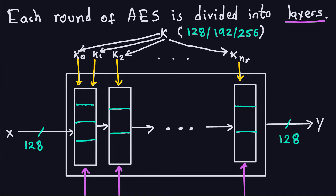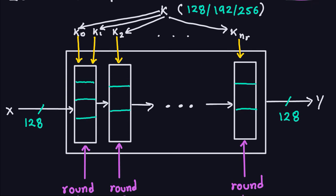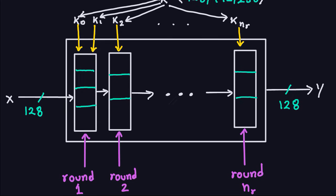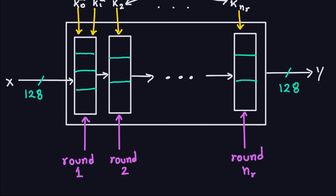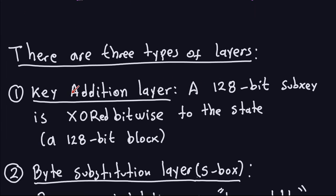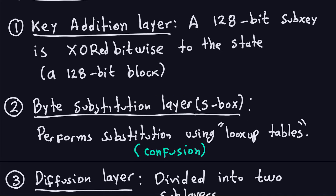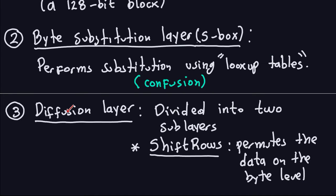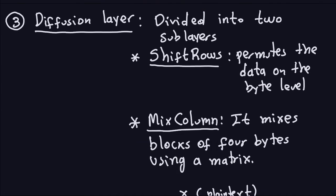Hello and welcome. In the last video we started discussing the internal structure of the Advanced Encryption Standard. We looked at what's inside that structure — there are some rounds, and the rounds depend on the key length, along with a key schedule. There's a difference between round one and other rounds: round one has four layers instead of three. We're going to talk about exactly what those layers are. We have a key addition layer, a byte substitution layer using an S-box or lookup table, and a diffusion layer which performs permutations.